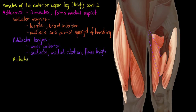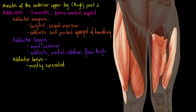Moving on to our last adductor muscle: the adductor brevis, meaning shortest. I've highlighted it there and it's a cutaway segment, as this muscle is mostly concealed by the other muscles, so you won't be able to see too much of it. Other muscles are going to be laying over the top of it, so if you're looking at a drawing or a cadaver, you won't see very much of this muscle at all.